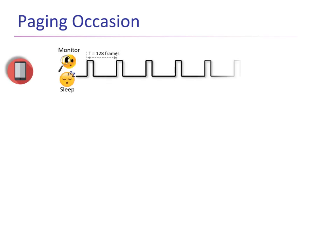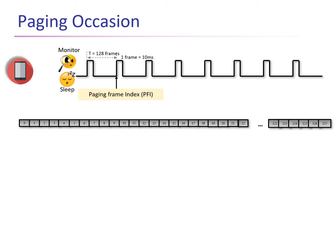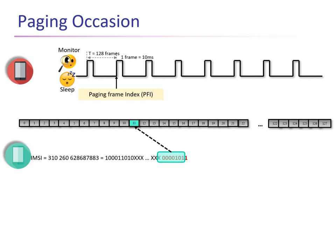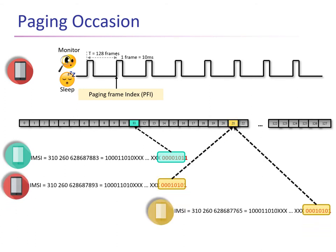Any cellular device in idle mode stops checking for incoming transmissions from the base station and periodically wakes up at a certain frame index number — what we call a paging occasion — to check for any pending services like calls or SMSs. The cellular device knows its paging occasion by using the last eight bits of the IMZ number. IMZ is the permanent identity provided to each cellular device by the core network. So any two cellular devices having the same last eight bits of the IMZ will have the same paging occasion and will wake up at the same paging frame index.